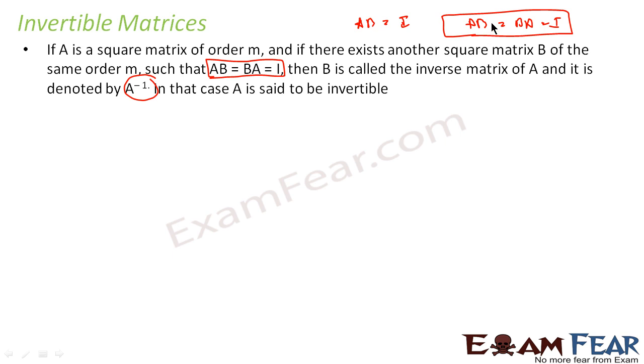So for an inverse to exist for a square matrix A—please note it is only for square matrices—there must exist a square matrix B of the same order such that AB = BA = I, and we call A invertible.